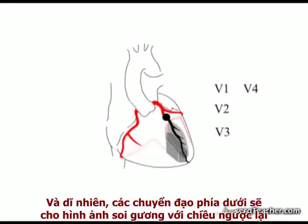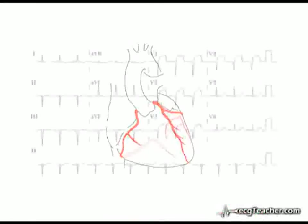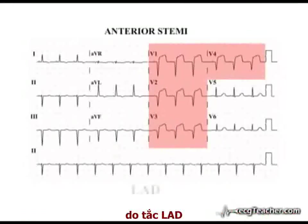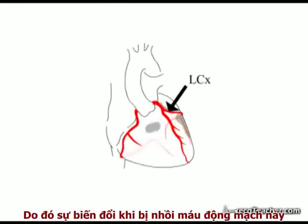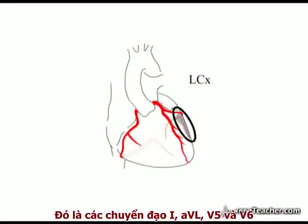The inferior leads are viewing the injury current from a diametrically opposite position and may show reciprocal ST depression. This is the classic ECG pattern for an anterior MI secondary to LAD obstruction. The left circumflex artery supplies the posterior and high lateral wall of the left ventricle, so the changes of infarction in the territory of this vessel are prominent in those leads looking at the left lateral surface of the heart — that is, lead 1, AVL, V5, and V6.